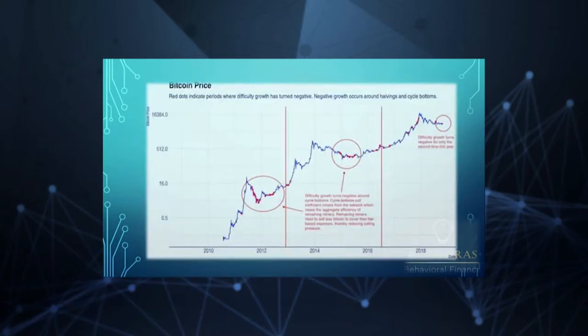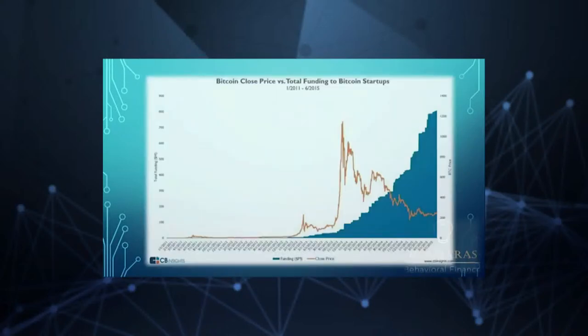So here is a chart. This is a logarithmic scale chart. What you see with the red dots is whenever the difficulty level gets negative. In other words, when it gets easier to have bitcoins, the result is a new bull market. And it's simple.